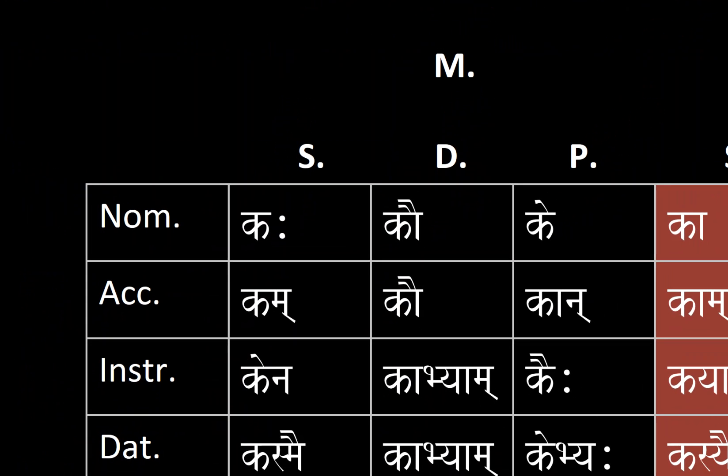For the masculine, nominative singular, dual, and plural we have kaḥ, kau, ke. For accusative singular, dual, and plural we have kam, kau, kān.